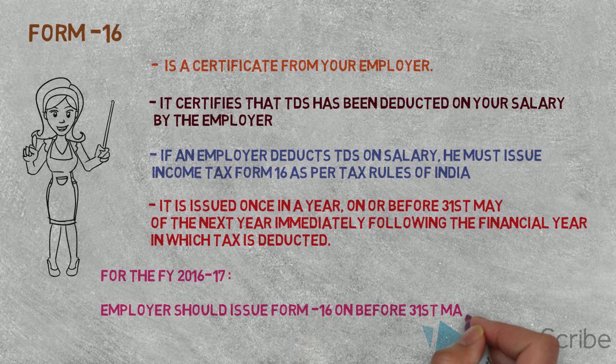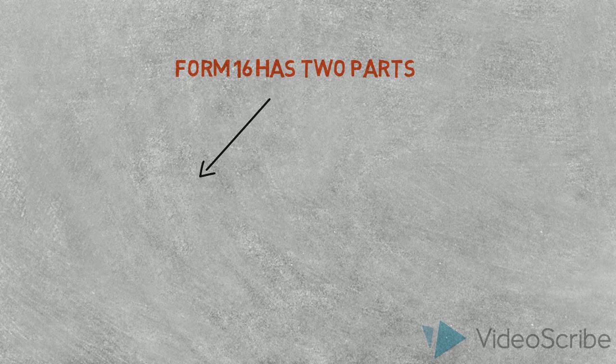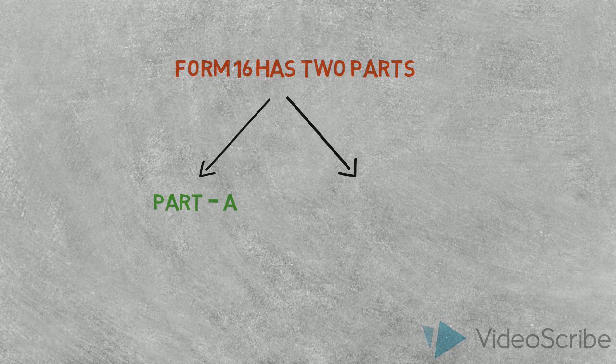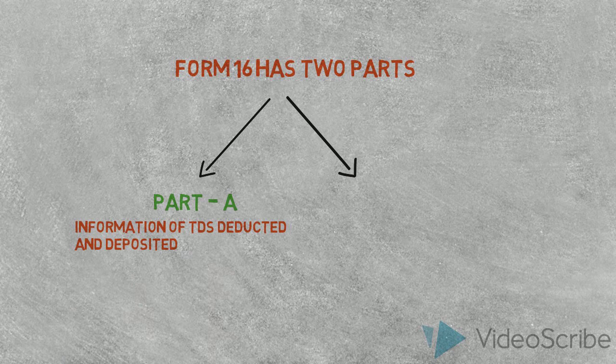Part A contains information about TDS deducted and TDS deposited. Part B contains the bifurcation or breakup of salary paid and deductions allowed under the Income Tax Act.